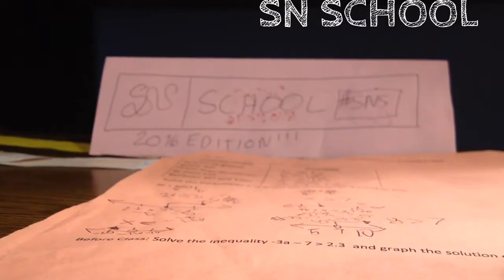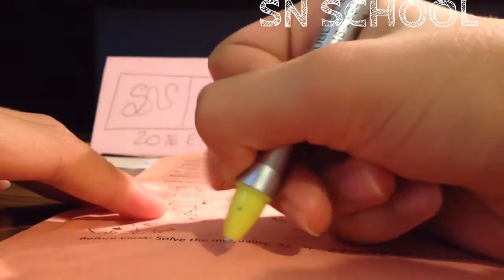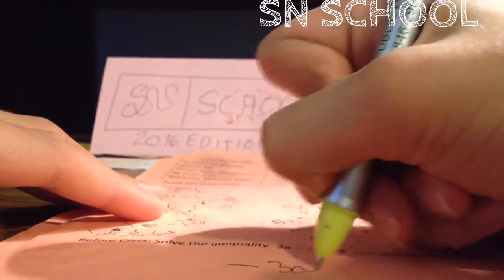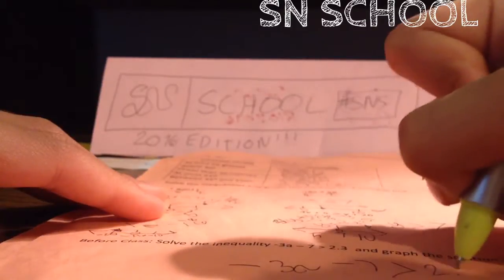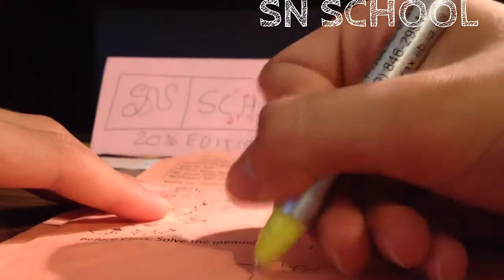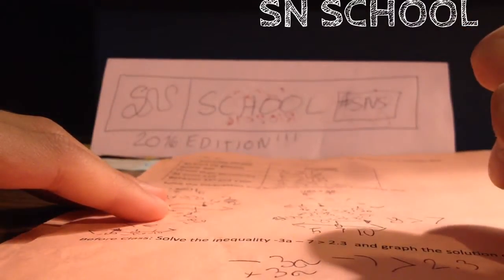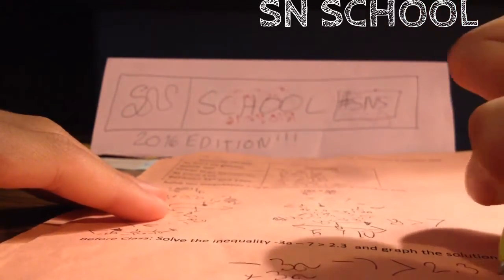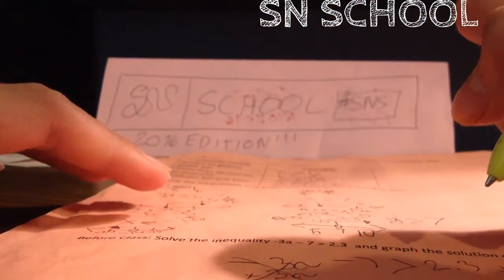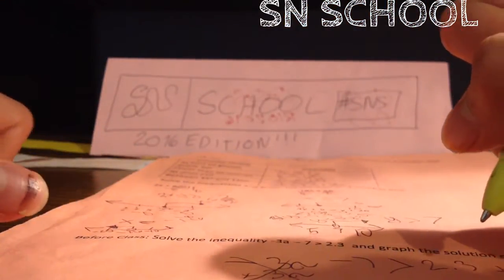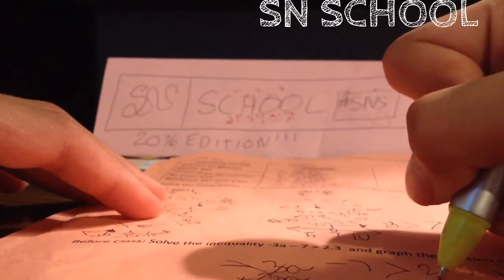So let's write it out: negative 3a minus 7 greater than 2.3. So let's add 3a, so this is gone. Subtract 2.3.